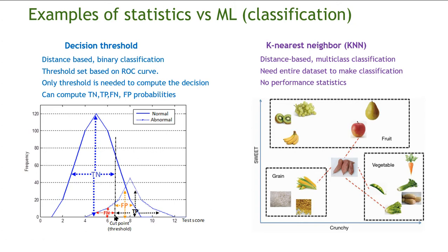Sometimes I will be wrong and sometimes I will be right. There are some normal individuals above the cut point — those will be false positives. There are some abnormal individuals below the cut point — those will be false negatives. So there are possible errors, but I have a way of making a decision, and statistics also gives me an estimate for how accurate that determination will be.